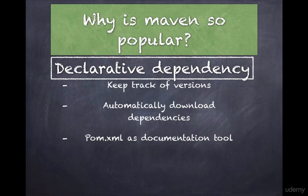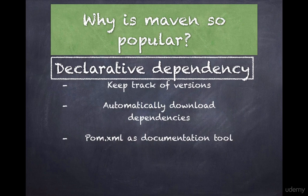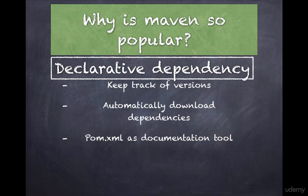Maven also provides declarative dependency management. Most Java projects rely on other projects and open-source frameworks to function properly. It can be cumbersome to download these dependencies manually and track their versions. Maven provides a convenient way to declare project dependencies in a separate pom.xml file, then automatically downloads them and allows you to use them in your project. In the pom.xml file you specify what, not how, and it can also serve as a documentation tool conveying your project dependencies and their versions.